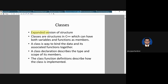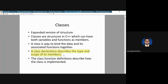Classes are an expanded version of structure, where along with variables you can also have functions. In classes you have variables and functions as members — when you define something inside a class it is called a member. A class is a way to bind data and its associated functions together. A class declaration describes the type and scope of its members, and the class function definition describes how the class is implemented.